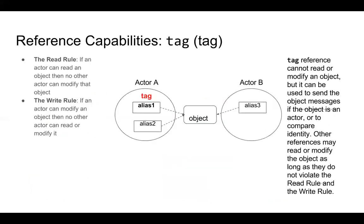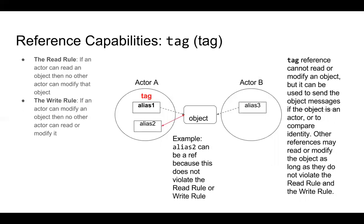The final reference capability is tag. A tag alias cannot read or modify an object, but it can be used to send the object messages if that object is an actor, or to compare identity. Other references may read or modify the object as long as they don't violate the read rule and write rule. Tag just says that a particular alias can neither read nor write to the object.